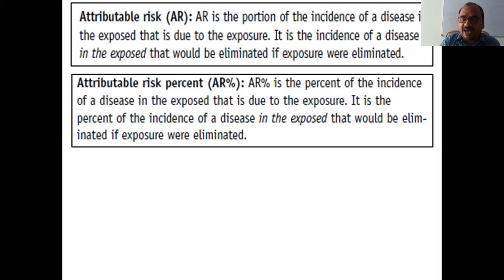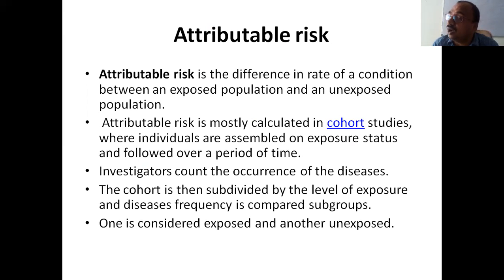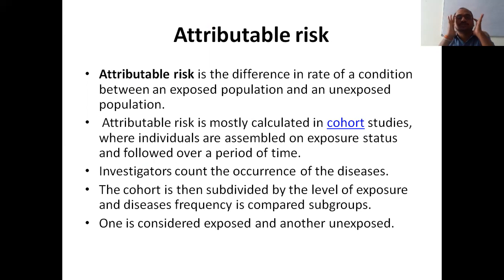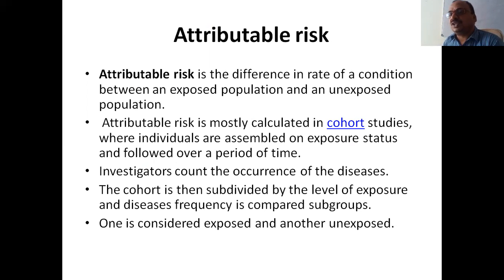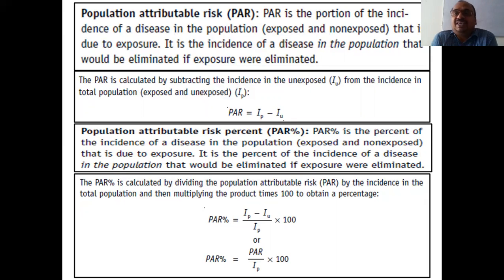Attributable risk is the difference in rate of a condition between an exposed population and an unexposed population. These studies are called cohort studies, where you compare exposed and non-exposed groups followed over a period of time. For example, those taking white rice versus those not taking white rice can be compared for diabetes — that is a cohort study.